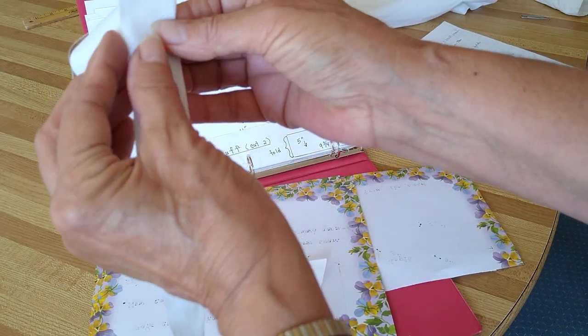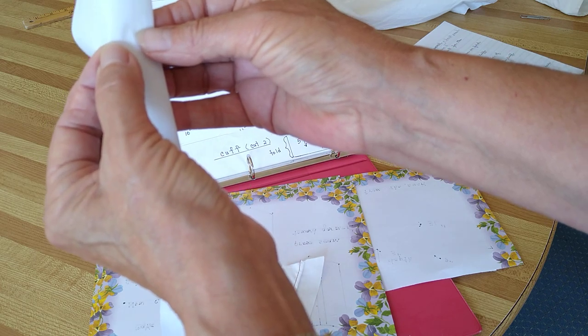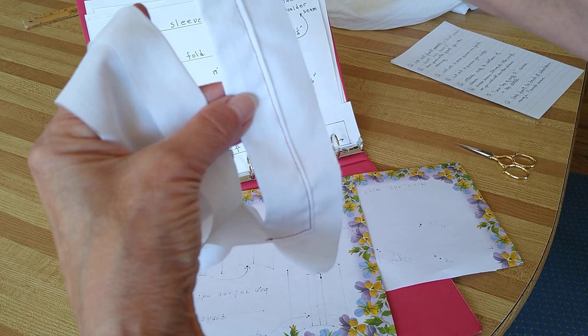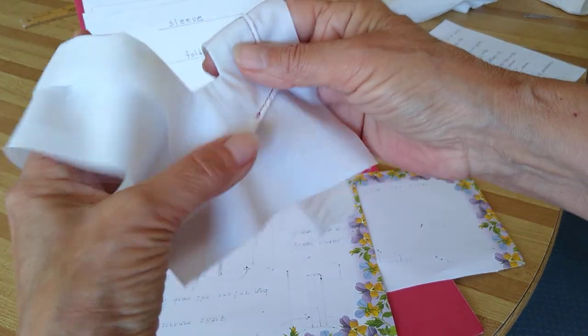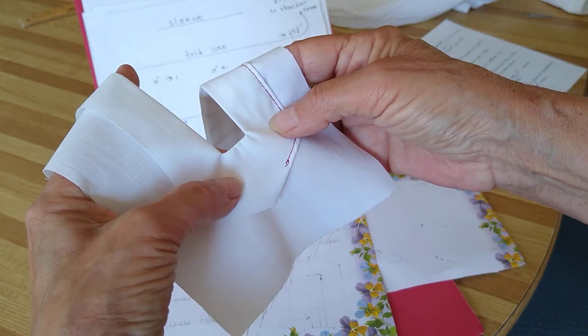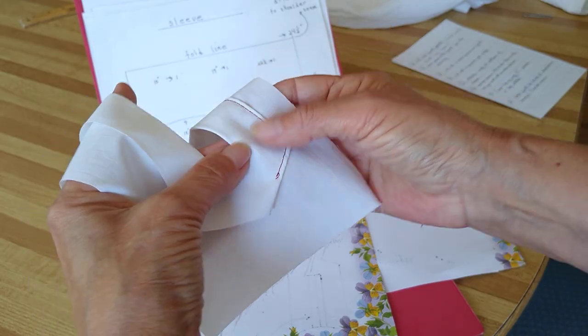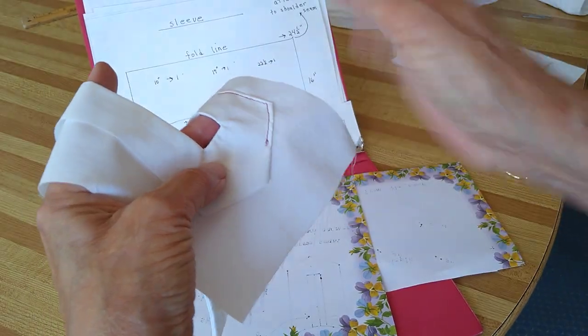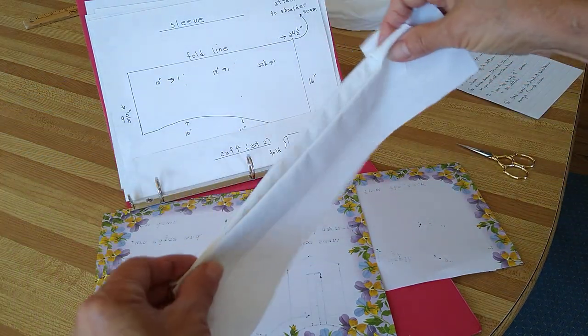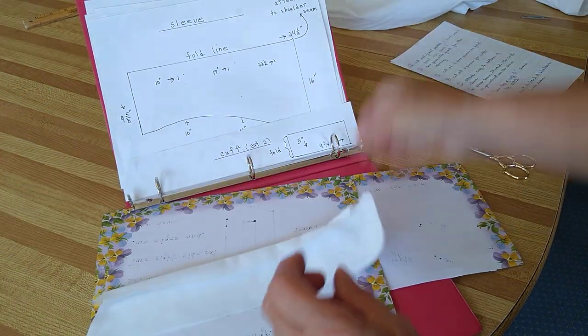Then you take this and you turn the edge and top stitch it. Here we have it here. Top stitch it and the bottom here, see how nice that turns. If you're daring you can make it smaller but I'm happy with a quarter inch, but that's up to you.